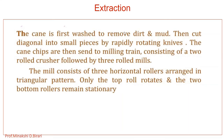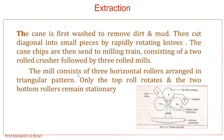The cane is first washed to remove dirt and mud, then cut diagonally into small pieces by rapidly rotating knives. The cane chips are then sent to a milling train consisting of two roll crushers followed by three-roll mills. The mill consists of three horizontal rollers arranged in a triangular pattern. Only the top roll rotates and the two bottom rollers remain stationary. The washed sugarcane is prepared for grinding by operations including chopping, pressing, and crushing.